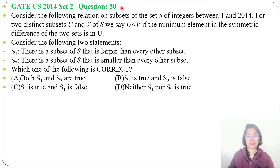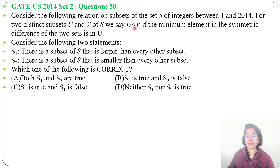Let's solve one previous question of set theory. This question was asked in GATE CS 2014, set 2, question number 50. Consider the following relation on subsets of the set S of integers between 1 and 2014. For two distinct subsets U and B of S, we say U is less than B if the minimum element in the symmetric difference of the two sets is in U. Consider the following two statements — which one of the following is correct? Four options are given.